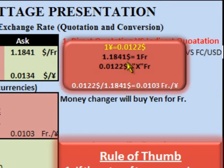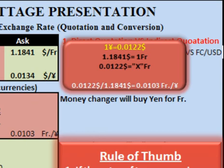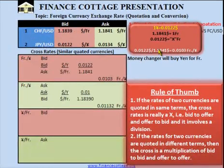This is $1.1841, but we have $0.0122. So to calculate how many francs we can get, we can cross-multiply this term. When we cross-multiply, we are dividing $0.0122 by $1.1841. So $0.0122 divided by $1.1841 equals 0.0103 francs per Yen.